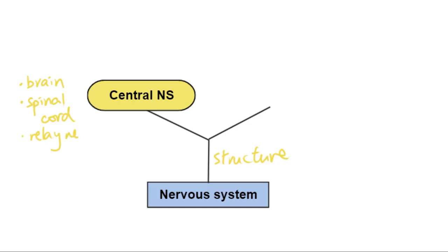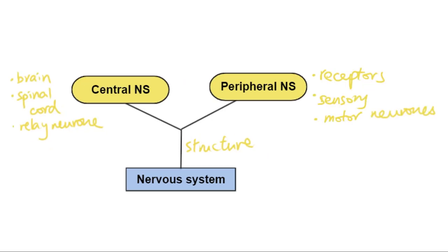The other one is the peripheral nervous system. The word peripheral means on the outside or on the outer edges, so this is referring to any of those neurons that are not part of the central nervous system. That would include receptors and the sensory motor neurons.